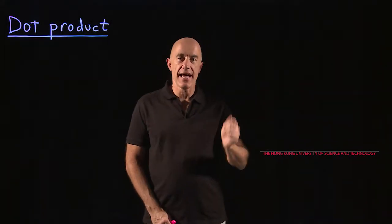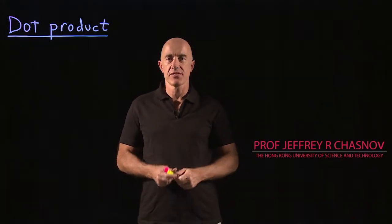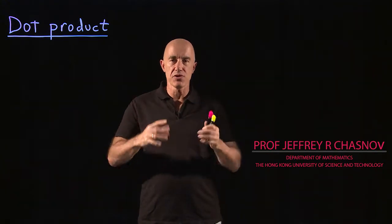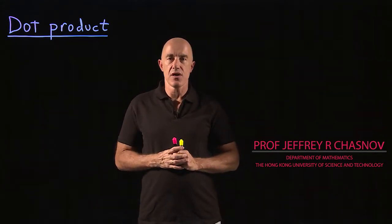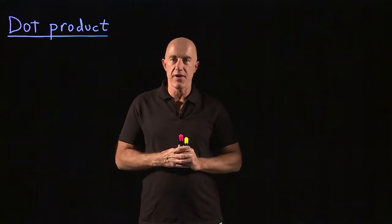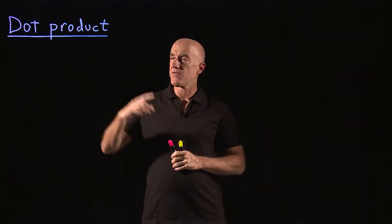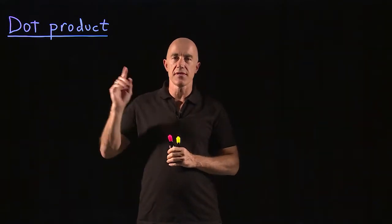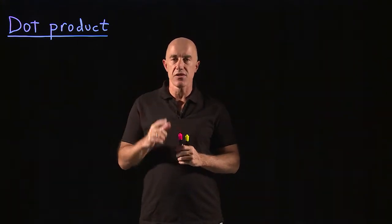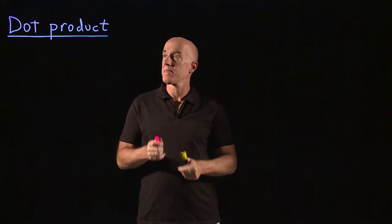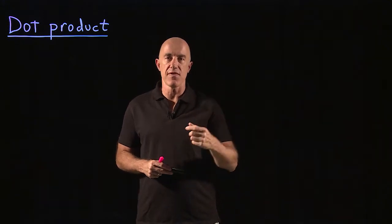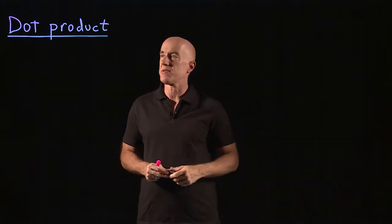We've talked about adding vectors, now we need to discuss how to multiply vectors. There are two types of ways of multiplying vectors. The first one is called the dot product, sometimes called the scalar product, because the multiplication of two vectors results in a scalar.